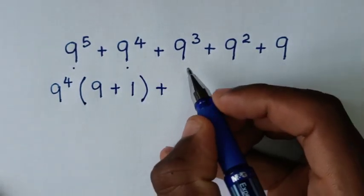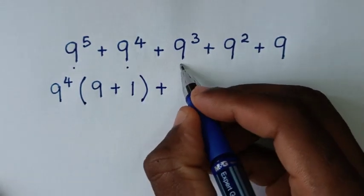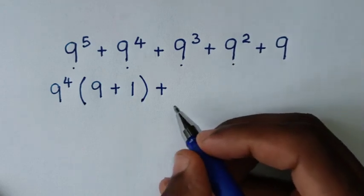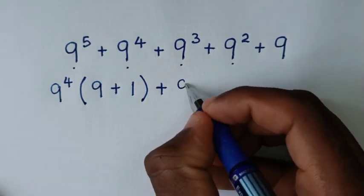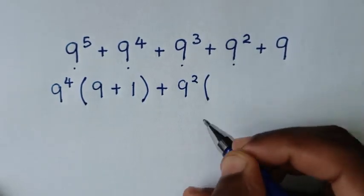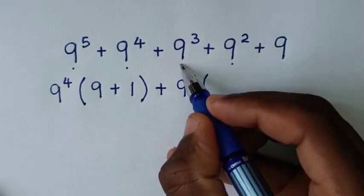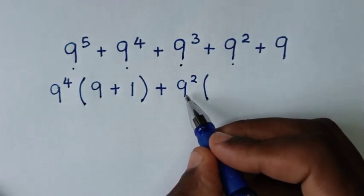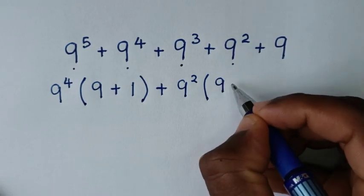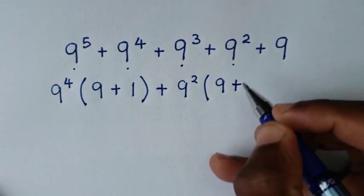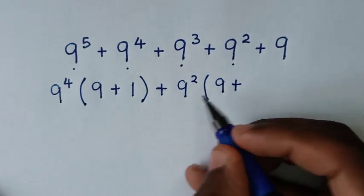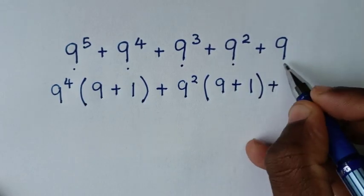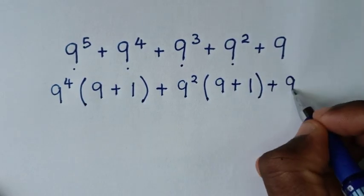Then plus, from here 9 power 3 plus 9 power 2 — 9 power 2 is common, so we will take 9 power 2 out of the bracket. 9 power 3 divided by 9 power 2 is 9 power 1, which is 9. Then plus 9 power 2 divided by 9 power 2, which is 1. Close bracket. Then plus this 9.